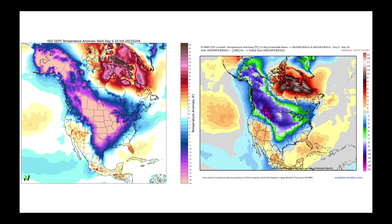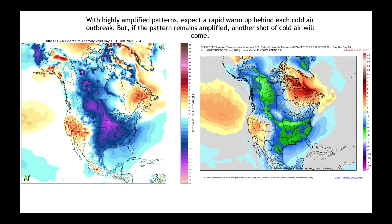Going out to the day 5 through 10 pattern, both the GFS and the European models show multiple shots of colder air through this time period, while bridging over the southeast and the blocked-up pattern over the southwest favor warmer conditions in those regions. Going all the way out to day 10 through 15 — with a highly amplified pattern like this, we do get shots of colder air with each outbreak, but just remember: when it's so amplified, you can get cold air come through and then a few days later a major warmup. This is how things are going to be through the middle part of this month.